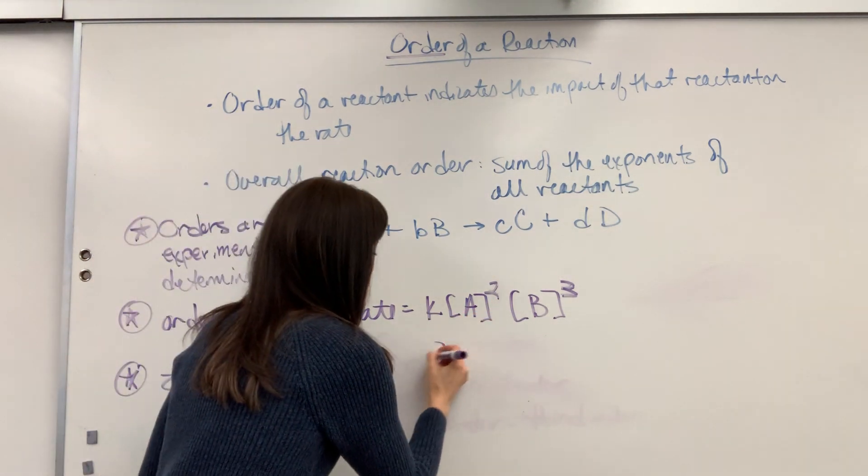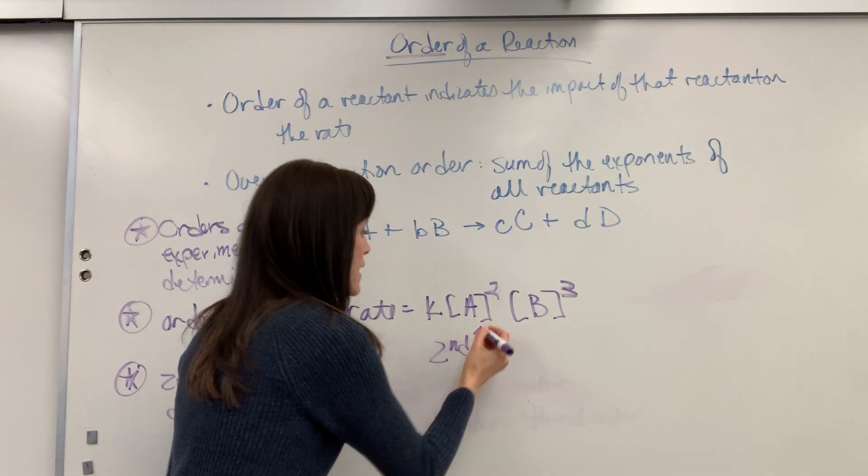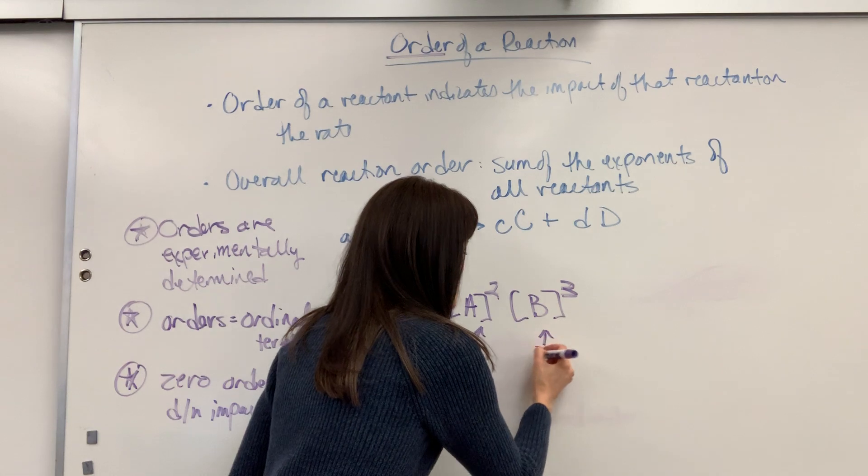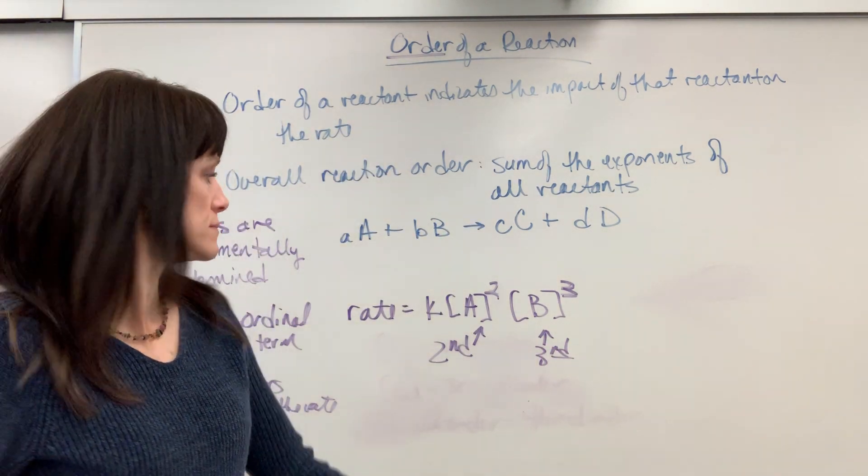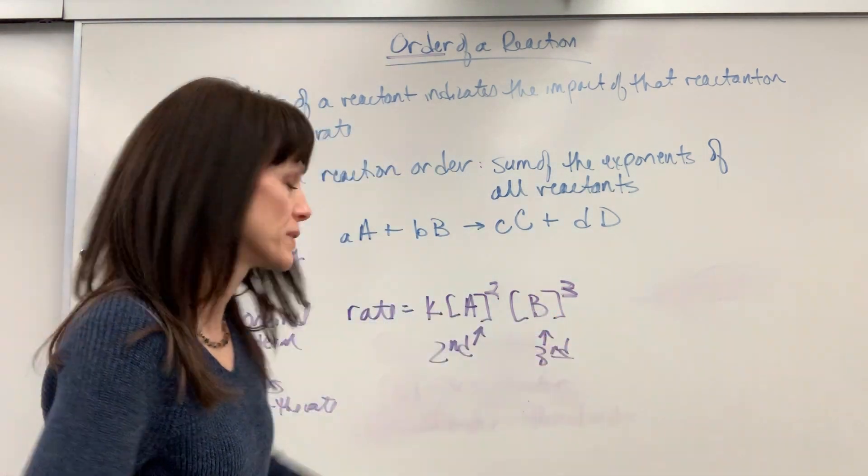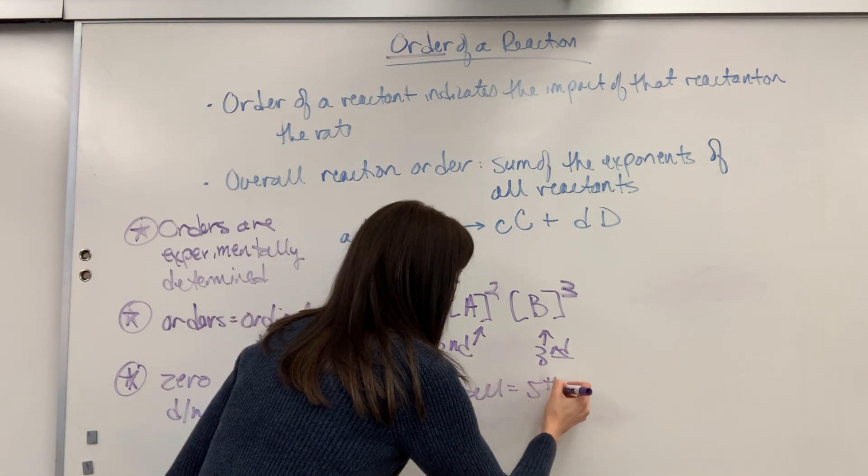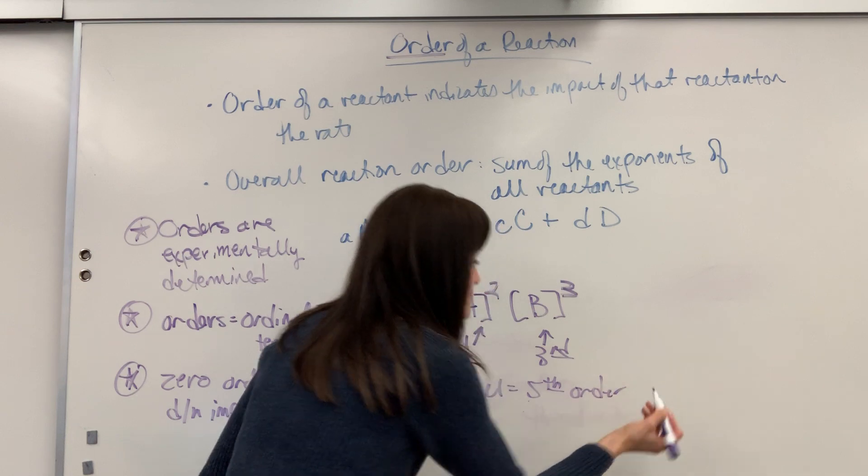That is second order. And what order is B? It is third order. And I say, what's the overall order? Add those two together. Two plus three. The overall is going to be fifth. It is a fifth order. And there you have it.